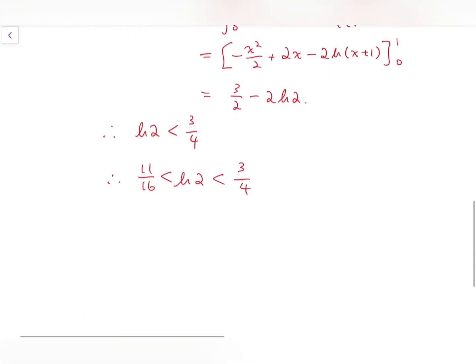If we remove the denominators, then we can even say that natural log of 2 times 16 is a number between 11 and 12. So it's a pretty interesting result.